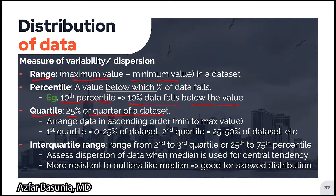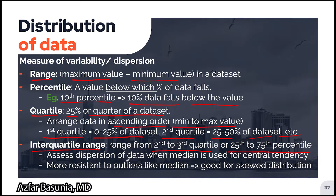To measure the quartiles, the data first needs to be arranged in ascending order from minimum to maximum value. The first quartile represents 0 to 25% of the data set, the second quartile represents 25 to 50%, and so on. A very high-yield concept for your boards is the interquartile range, which is the range from the second to the third quartile — or from the 25th to the 75th percentile. The interquartile range assesses dispersion when the median is used, and like the median, it is more resistant to outliers and thus useful with skewed distributions.